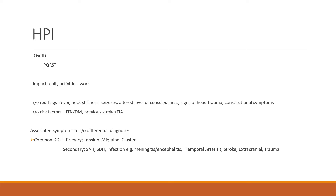For the history of presenting illness, start with the onset, the setting, the course, frequency, and duration. For the onset, is it sudden or gradual? Is there a particular place where the patient experiences this headache? Is the headache present throughout the day, or does it come and go? Has the patient experienced a similar condition in the past, or is this the first time? And for how long has the patient had this headache?